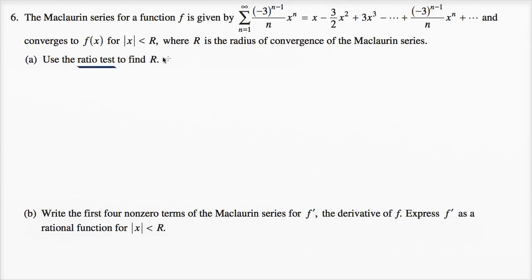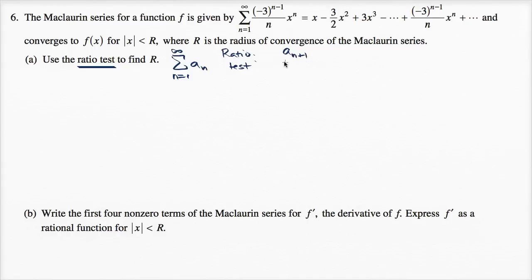The ratio test tells us: if we have an infinite series going from n equals one to infinity where each term is a sub n, the ratio test says let's consider the ratio between successive terms. We look at a sub n plus one over a sub n, and in particular we want to focus on the absolute value of this ratio.